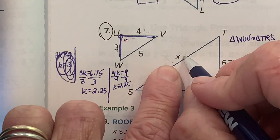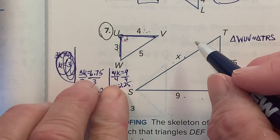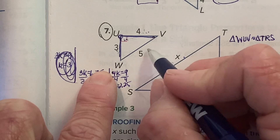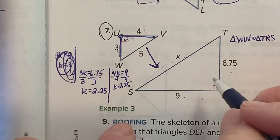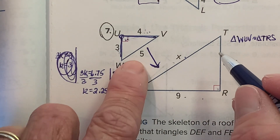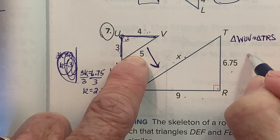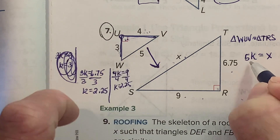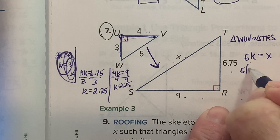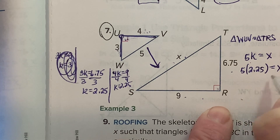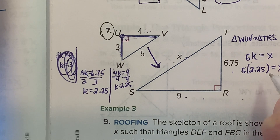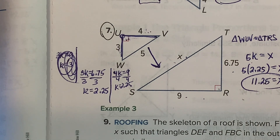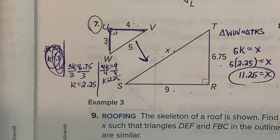To find x, multiply the hypotenuse of the small triangle by the scale factor to get the hypotenuse of the big triangle. The scale factor is 2.25, so x equals the small hypotenuse times 2.25, giving x = 11.25. We'll practice more of these in class.